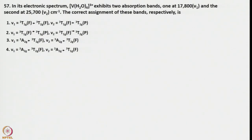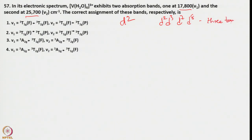Another problem: in its electronic spectrum, hexa-aqua vanadium(3+) exhibits two absorption bands — one at 17,800 cm⁻¹ (ν1) and the second at 25,700 cm⁻¹. The correct assignment of these bands is asked with four options. This is a D2 system, which belongs to the second category (D2, D3, D7, D8) that typically shows 3 transitions. However, this is a special case showing only 2 absorptions.